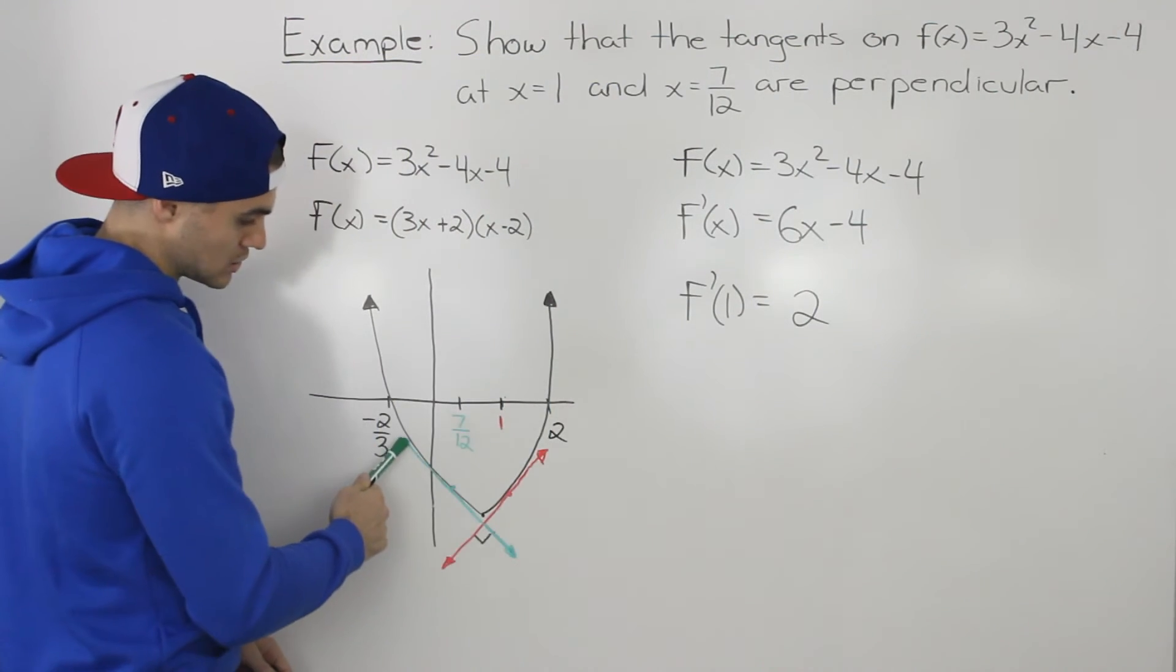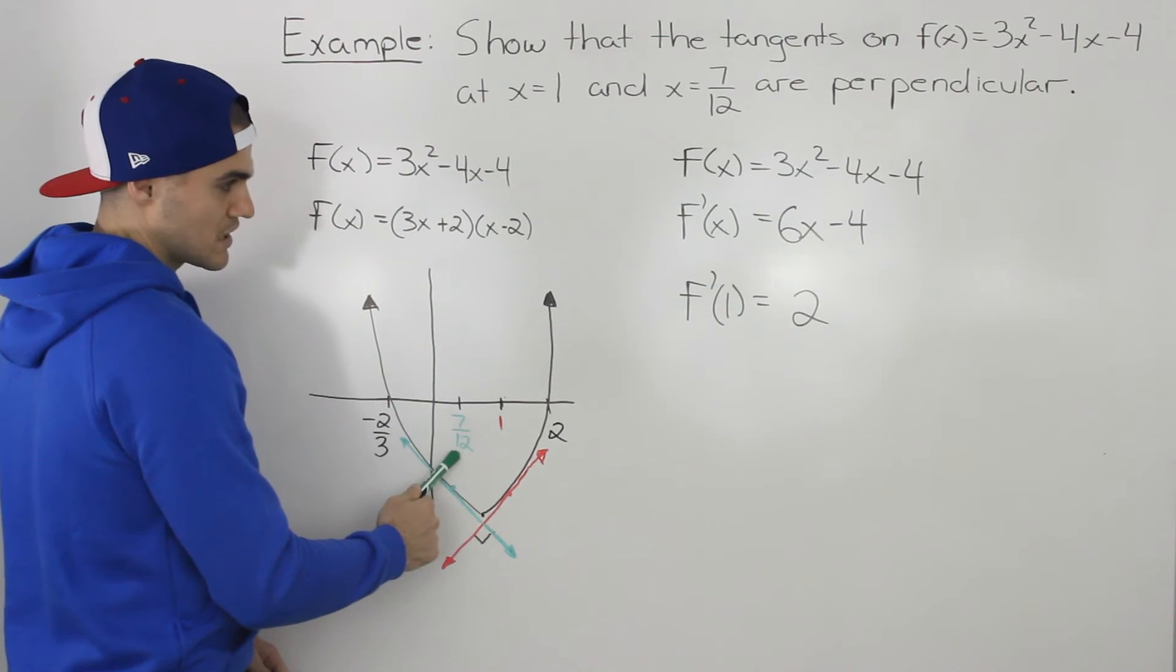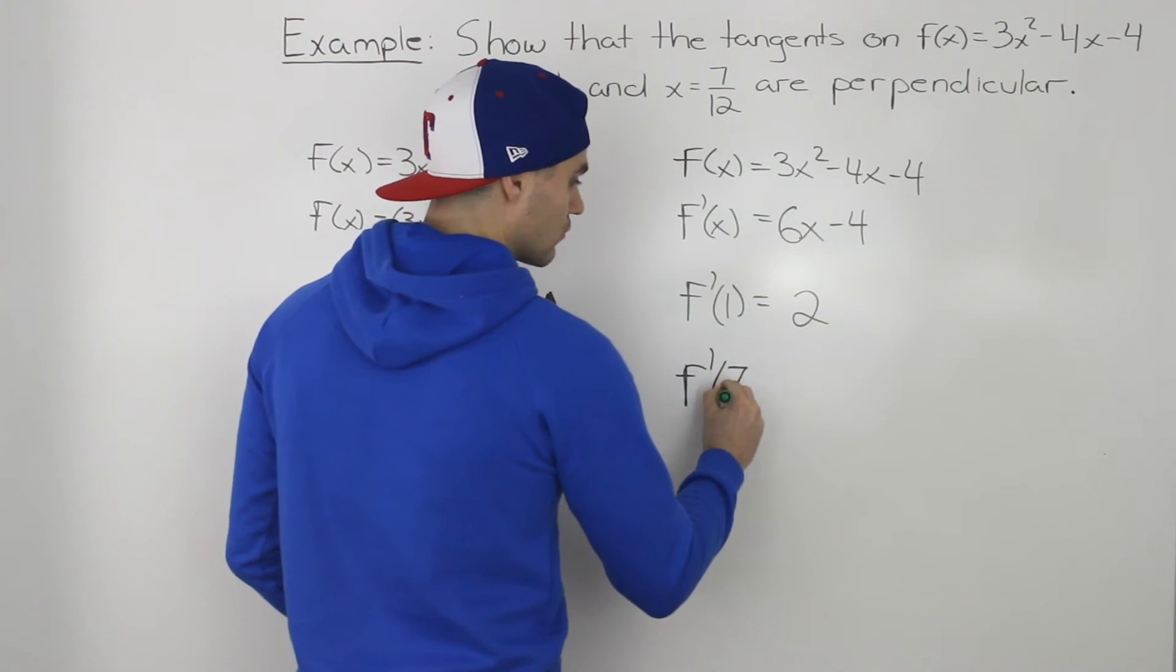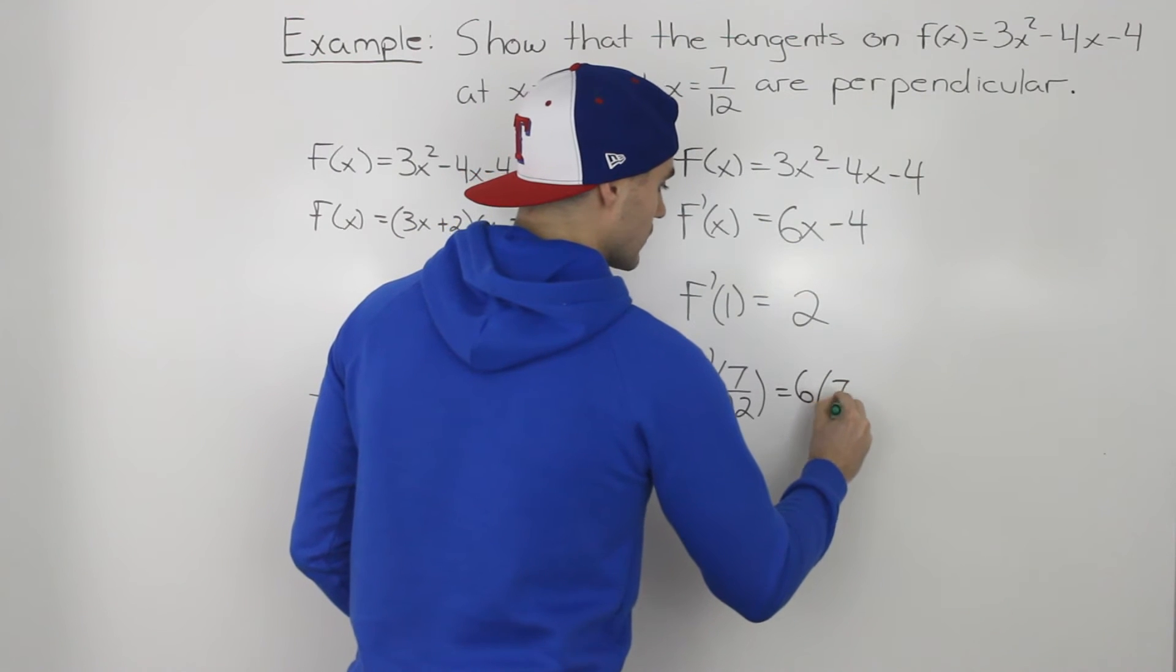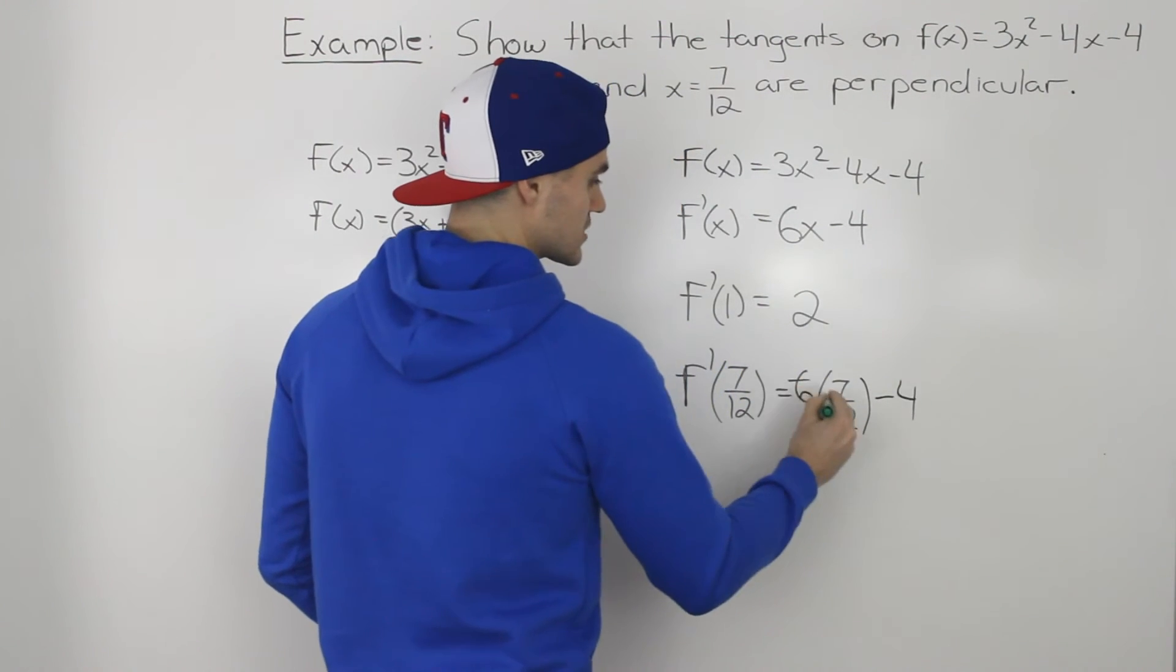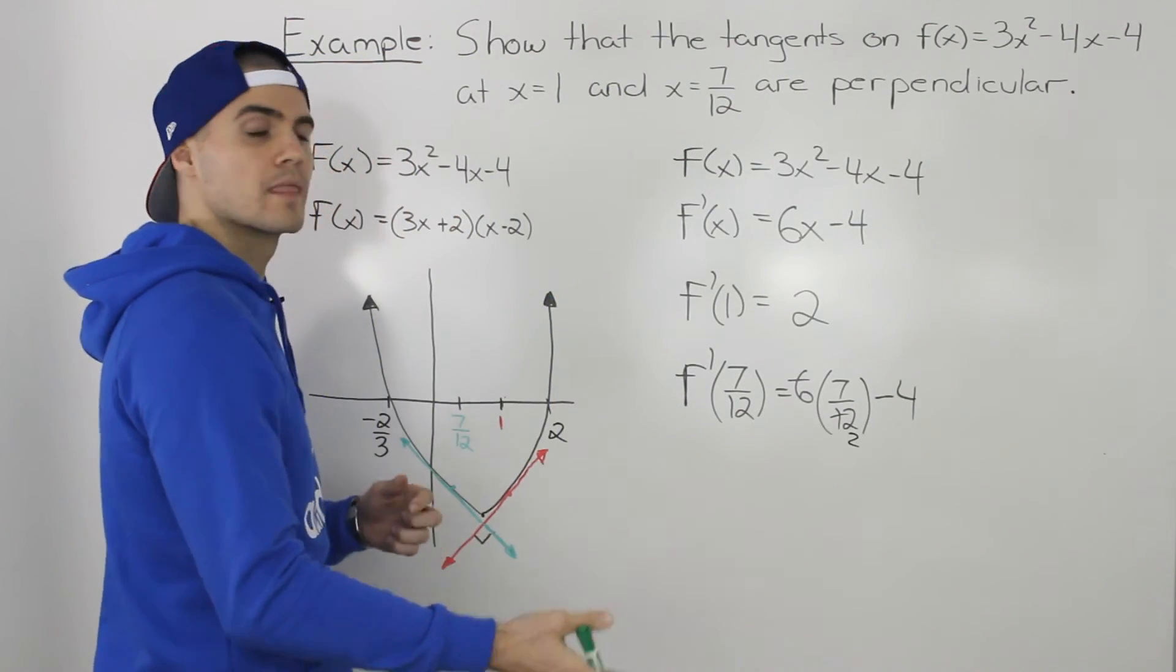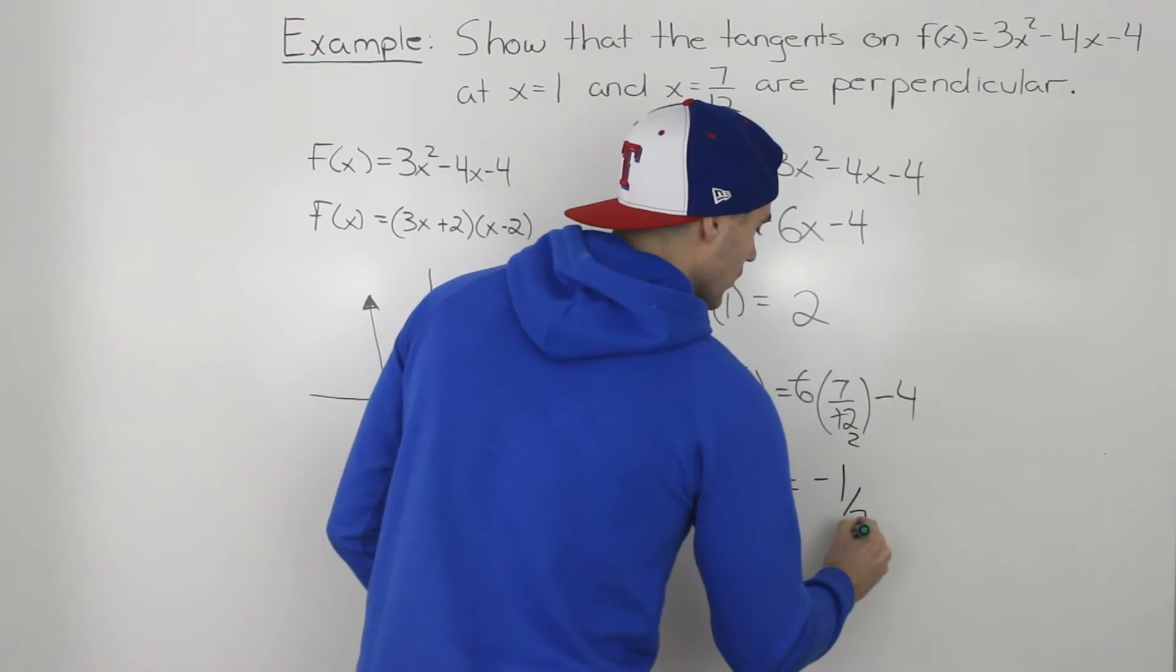If we want to find the slope of this green tangent at an x value of 7 over 12, we would just plug in 7 over 12 into the derivative. So 6 times 7 over 12 minus 4, 6 goes into 12 twice, 7 over 2, which is 3.5 minus 4, gives us negative 1 over 2.